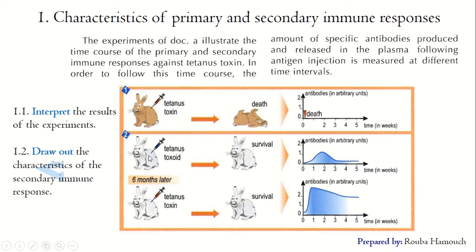However, in the second experiment, the rabbit having received tetanus toxoid — the attenuated form — survives and begins to produce antibodies. The level of antibodies starts increasing after week one following the injection and reaches a maximum of one arbitrary unit at week two. Then the level of antibodies decreases to become null at week four. This indicates that the injection of tetanus toxoid triggers an immune response characterized by the production of a small amount of antibodies, and this production is not durable — it doesn't persist.